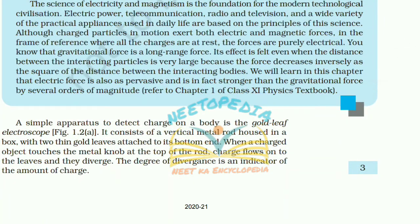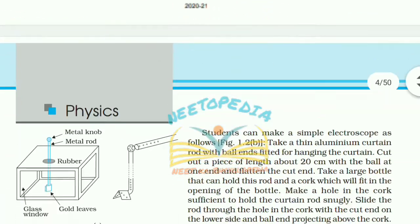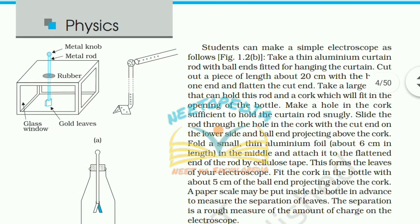A simple apparatus to detect a charge in a body is the gold leaf electroscope. It consists of a vertical metal rod housed in a box with two thin gold leaves attached to its bottom end. When a charged object touches the metal knob at the top of the rod, the charge flows onto the leaves and they diverge. The degree of divergence is an indicator of the amount of charge.